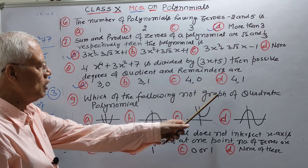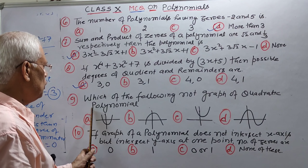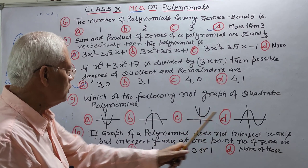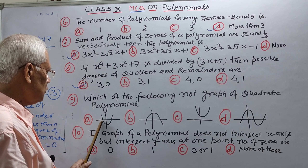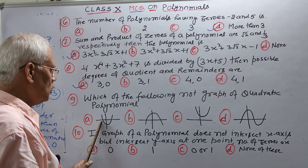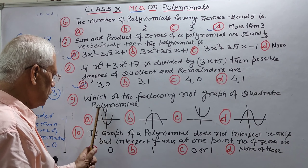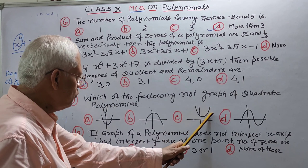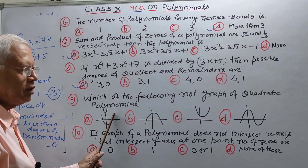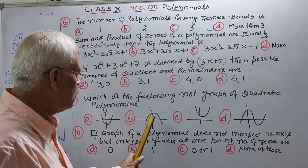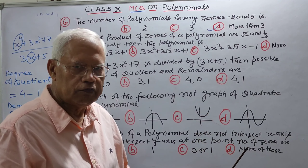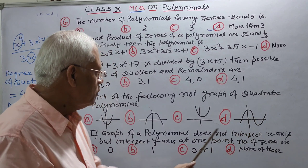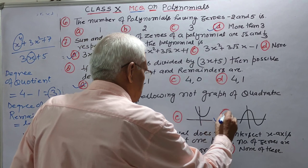Question nine: which of the following is not a graph of a quadratic polynomial? Quadratic polynomial ka graph parabola hota hai — upward parabola ya downward parabola. Teen options quadratic polynomial ke graphs hain kyunki yeh upward aur downward parabolas hain. Lekin ek graph parabola ka nahin hai. So answer is D.